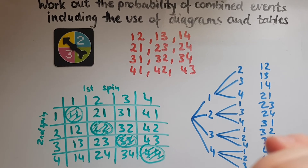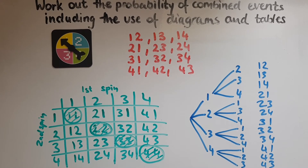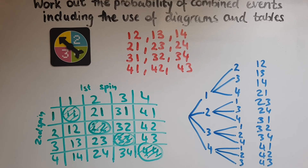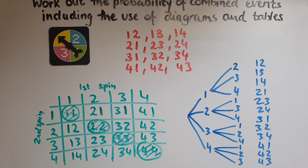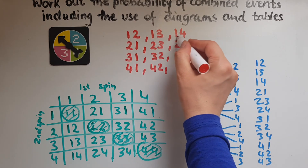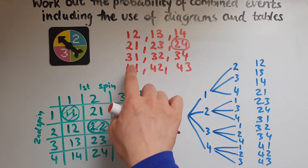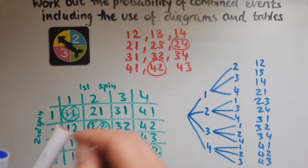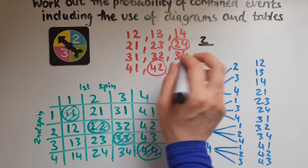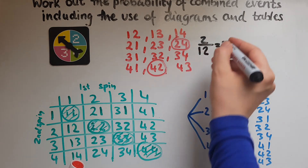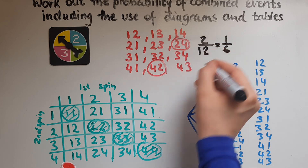We could now answer probability questions using this. For example, what is the probability of getting even numbers only? The even-and-even outcomes are two and four, and four and two — so that is two possible outcomes out of twelve total (4 × 3 = 12). Two twelfths simplifies to one sixth, because both can be divided by two.